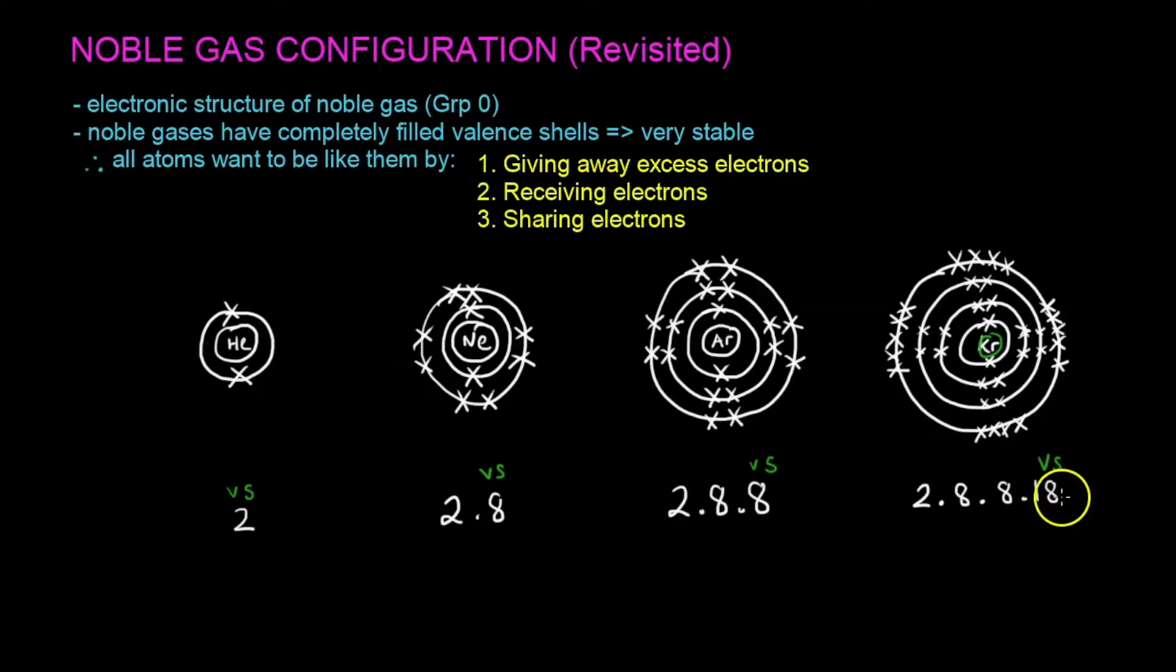Valence just means the outermost. So the word valence just means outermost. So valence shell means outermost shell and valence electrons means outermost electrons which in this case are all the outer axis in this case. So with that out of the way, basically we want to know that we want to form all atoms in this format. We want all atoms to either accept, accept, give away or share electrons to form this magical number 2, 2-8, 2-8-8 or 2-8-8-18 basically. Let's do a few examples.